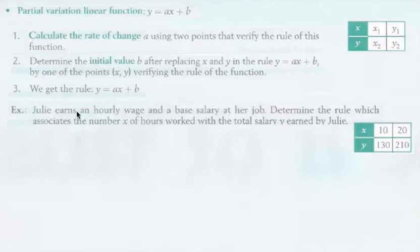For example, Julie earns an hourly wage and a base salary at her job. Determine the rule which associates the number x of hours worked with a total salary y earned by Julie. The point 1 is 10, 130. Point 2 is 20, 210.